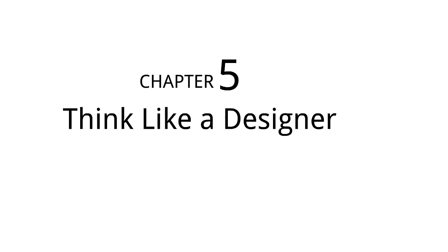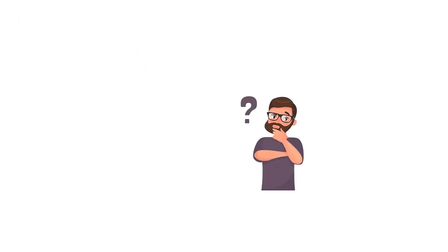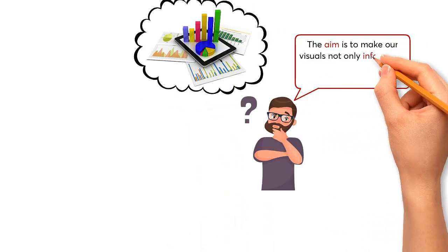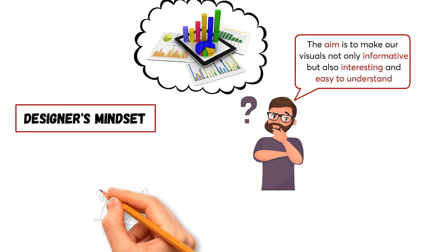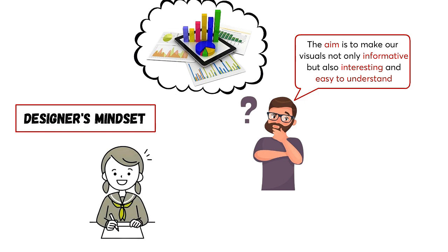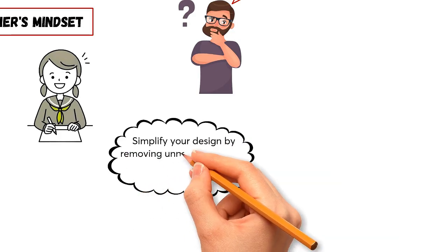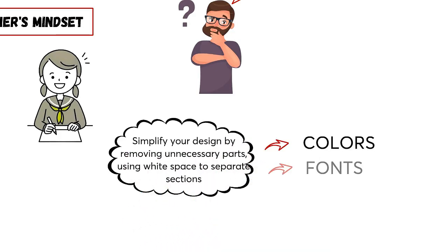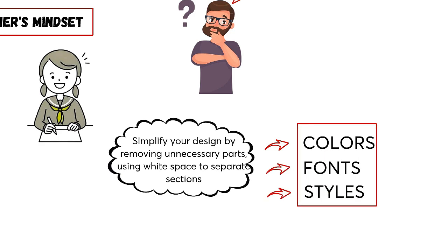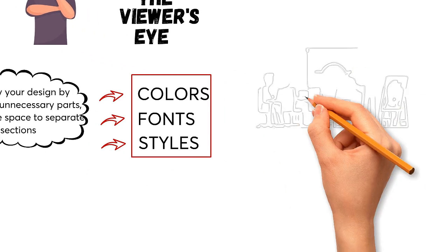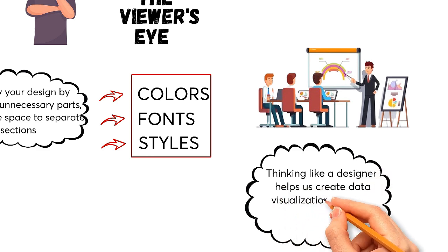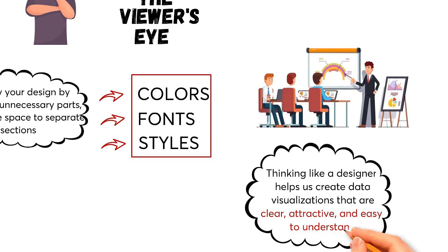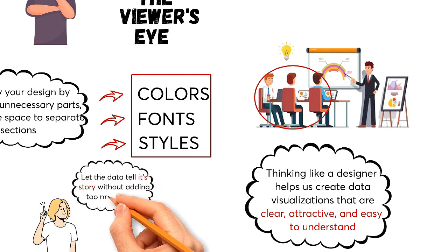Chapter 5 is titled Think Like a Designer. Here, Cole highlights the need to think like a designer when making data visuals. The aim is to make our visuals not only informative but also interesting and easy to understand. By adopting a designer's mindset, we can turn complex data into clear and engaging stories. Simplify your design by removing unnecessary parts, using white space to separate sections, keeping colors, fonts, and styles consistent, organizing elements to lead the viewer's eye, and always focusing on what your audience needs. Our goal is to let the data tell its story without adding too many details.